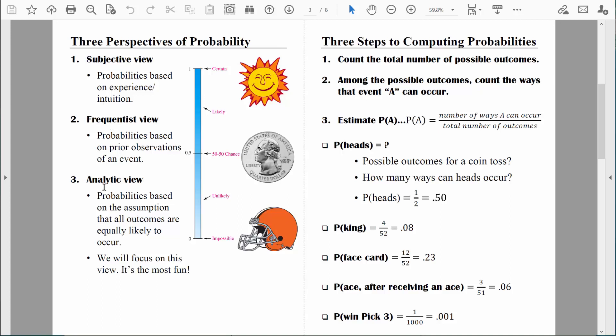That said, there's another viewpoint of probability that we call the analytic perspective. This is a really good way to compute probability as well, but it is not based on past data. Instead, based on the analytic view, we actually compute probabilities based on assumptions that all outcomes regarding some event are equally likely to occur. Let's go through a simple example of that so you can see what I mean, and so you can see that the analytic view differs in important ways from the frequentist view.